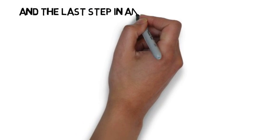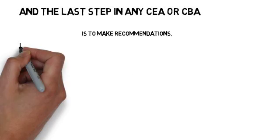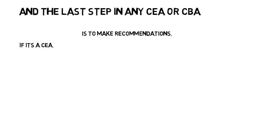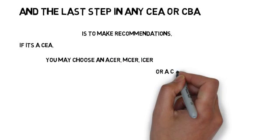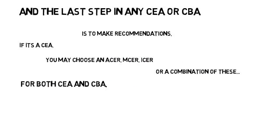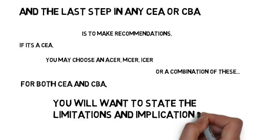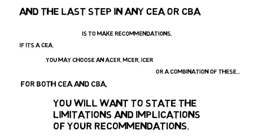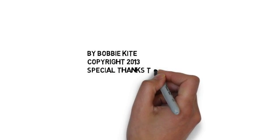The last step in either a CEA or CBA is to make recommendations. If it's a CEA, you may choose an ACER, MERCER, or ICER, or a combination of these. For both CEA and CBA, you will want to state the limitations and implications of your recommendations. These, in a nutshell, are the steps for CEAs and CBAs.